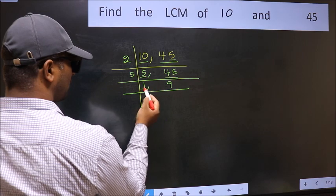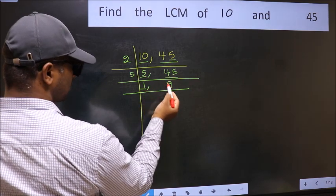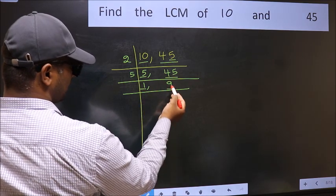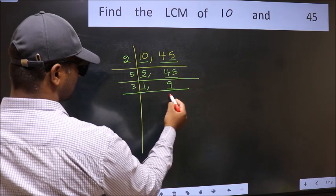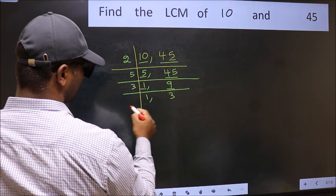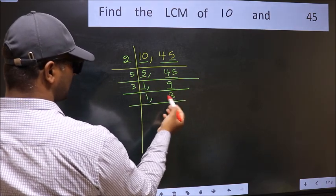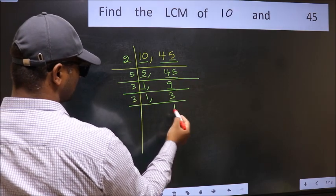Now we got 1 here. So focus on the next number, 9. 9 is 3 times 3. Now here we have 3. 3 is a prime number. So 3 times 1 is 3.